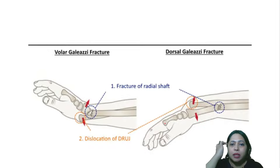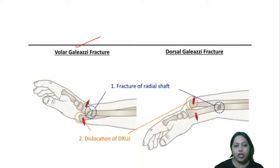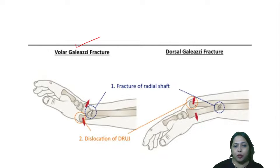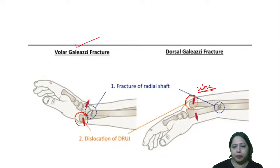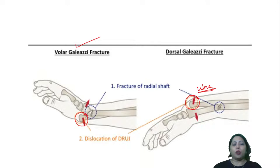Galeazzi fracture involves a fracture of the radius shaft with dislocation of the distal ulna. There is a dorsal Galeazzi fracture where dislocation is on the dorsal side, and a volar Galeazzi fracture where the dislocation is on the volar side.